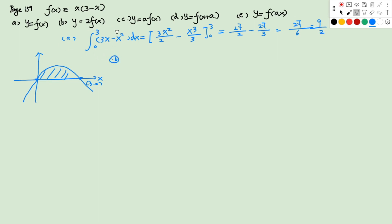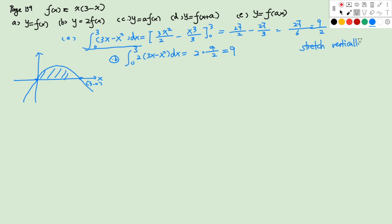For part b, y = 2f(x). We can think of this as a vertical stretch. So the integral from 0 to 3 of 2(3x − x²) dx — we take out the 2, and since the original integral equals 9/2, the new area is 2 × 9/2 = 9. In general, a vertical stretch with scale factor k multiplies the area by k.